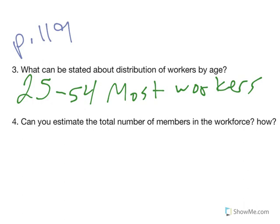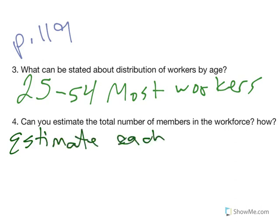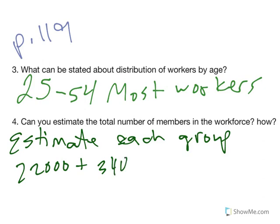Number four - can you estimate the total number of members in the workforce? And if you can, how? I would say yes. So if we estimate each group - 16 to 24 has about 22,000, and then 25 to 34 is 34,000 - you could estimate each group and add them all together, and that would give you an estimate of the total number in the workforce. You can get that data from that histogram.